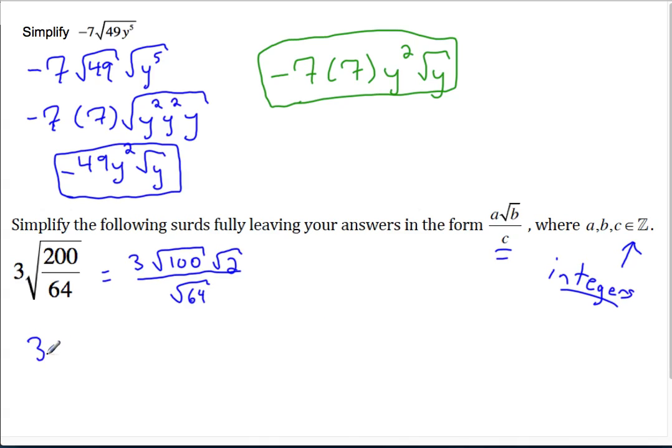So now you have 3 times 10, square root of 2 on the numerator, and 8 on the denominator. And you see we're getting closer to this form. So even though this one just said simplify, this one says simplify with a big hint of what your answer looks like. 3 times 10 is 30 over 8.